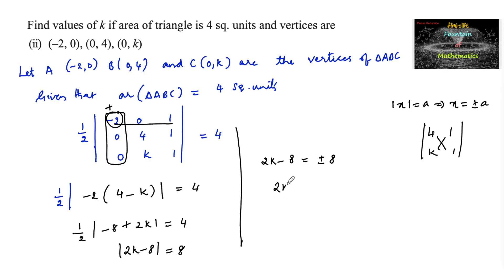So we can write 2k minus 8 equals plus 8, or 2k minus 8 equals minus 8. Therefore, 2k equals 8 plus 8, which is 16, or 2k equals minus 8 plus 8, which is 0.